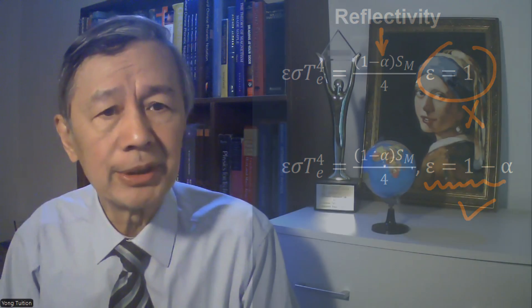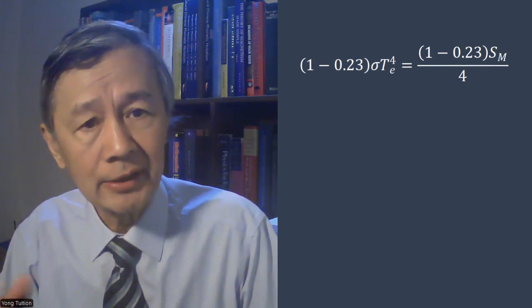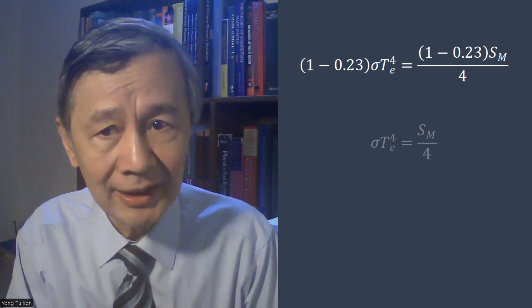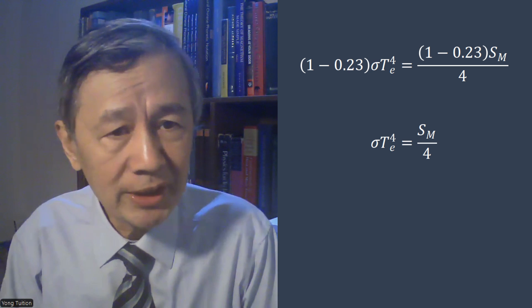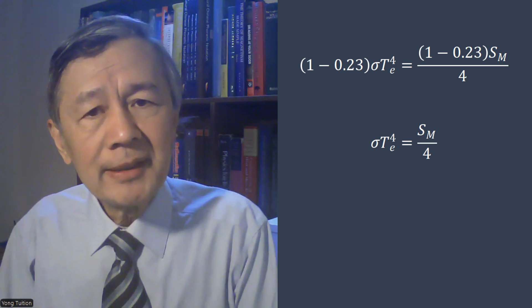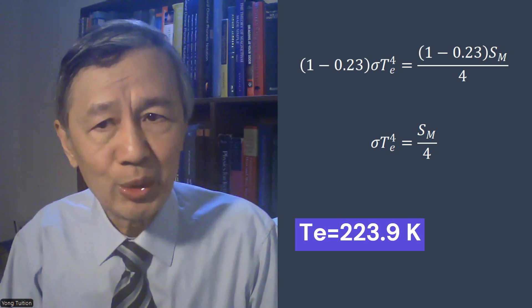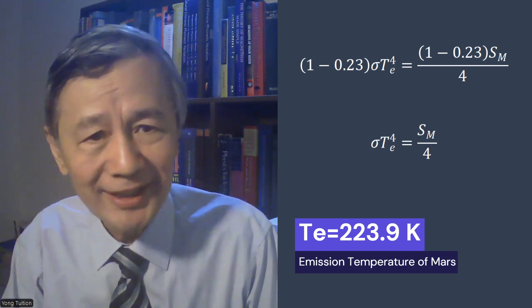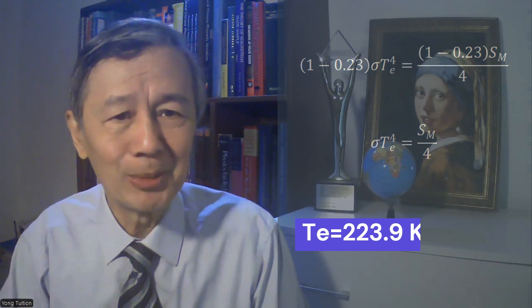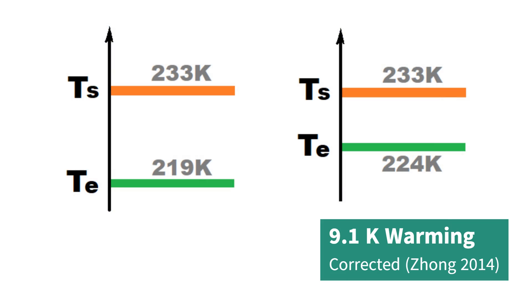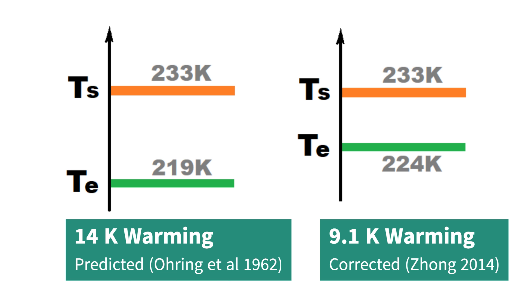To be exact, the emission temperature should be determined by this radiative balance condition at the top of the atmosphere. By algebraically removing the cofactor on both sides, the equation can be simplified. From this equation, the emission temperature is 223.9 Kelvin, rather than 219 Kelvin. As a result, their predicted greenhouse warming becomes only 9.1 Kelvin, instead of 14 Kelvin.